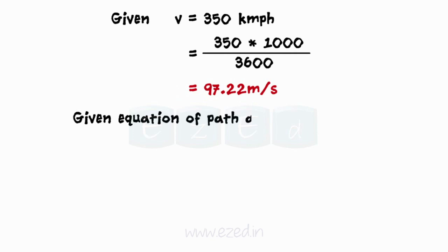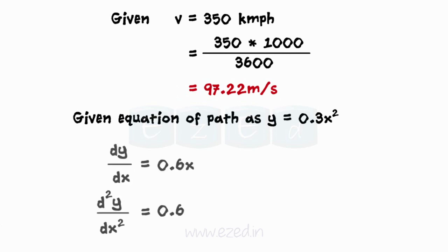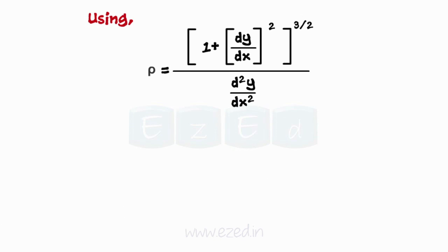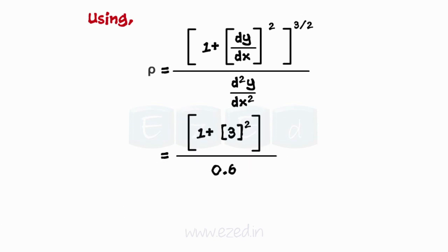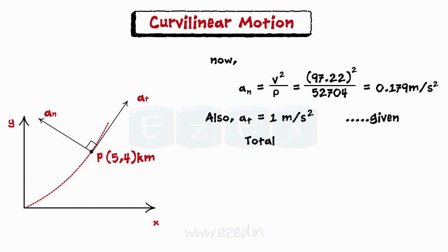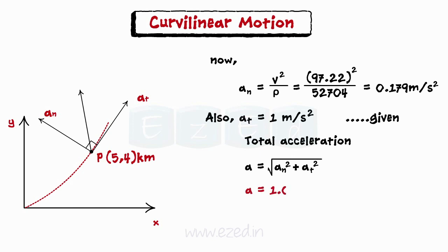The equation of the curve is given as y equals 0.3x squared. We have to find out the magnitude of total acceleration at point P. Taking the double derivative of the given equation, find its position at x equals 5 kilometers. Using the formula for radius of curvature and substituting the values, we get the radius of the curved path. Once the radius is known, we can find the normal acceleration. The tangential acceleration is given as 1 meter per second square. With the help of normal acceleration and tangential acceleration, we get the resultant acceleration.